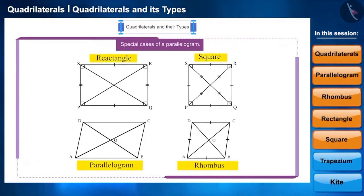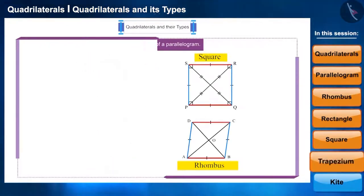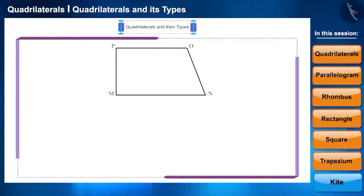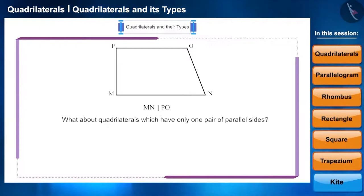All the quadrilaterals we have seen so far have parallel opposite sides. But, what about quadrilaterals which have only one pair of parallel sides? What do we call these types of quadrilaterals? You may pause the video to think about an answer. Friends, such quadrilaterals are called trapezium.